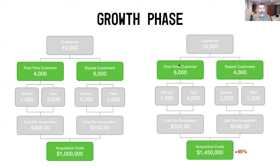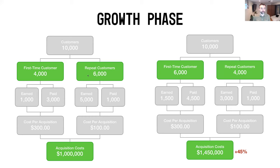Now let's look at the growth phase, where you have more first-time customers than repeat customers. We invert the 4,000/6,000 split to 6,000 first-time and 4,000 repeat. Maintaining the 75/25 earned-to-paid split, that's 4,500 paid first-time customers at $300 plus 1,000 paid repeat customers at $100, giving you about $1.35 million more in acquisition costs — roughly 45% more than the base scaling scenario.